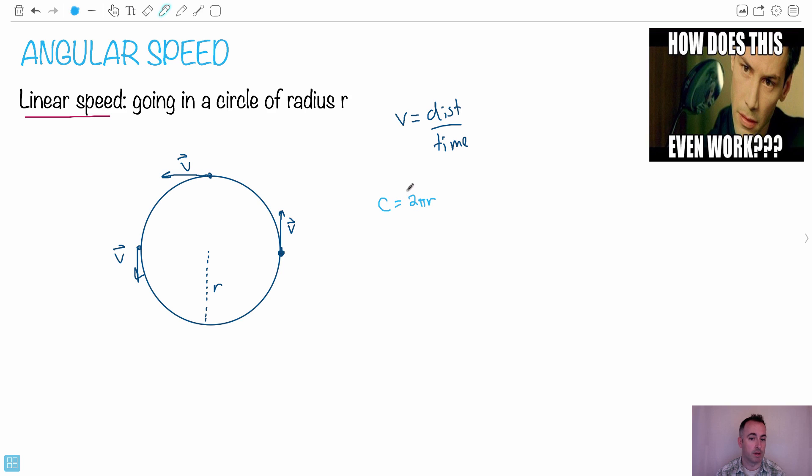So I hope it's okay with you then. We're going to define the linear speed as the distance traveled, which is 2πr, that's the distance to go around one whole circle, divided by the time it takes to go around a whole circle, which we call T. This is your linear speed.